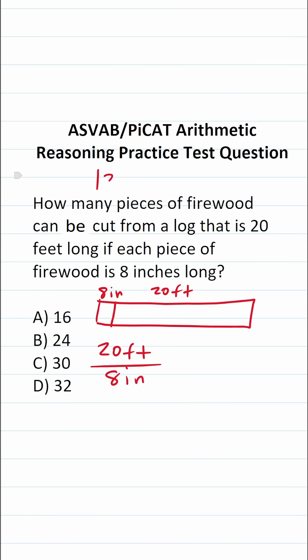And for that, you have to know that there are 12 inches in every foot. So in other words, to convert 20 feet to inches, we're going to take 20, and we're going to multiply it by 12.